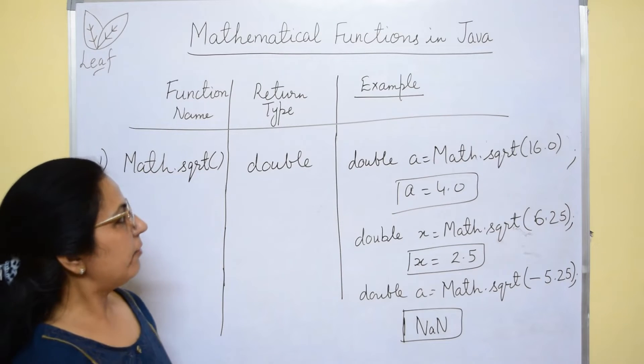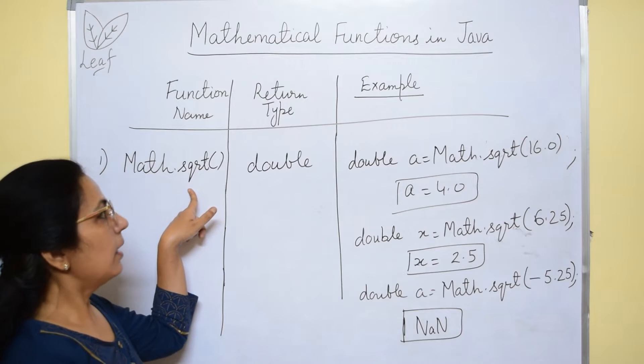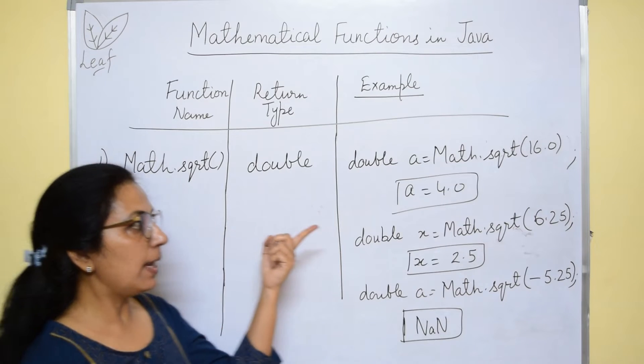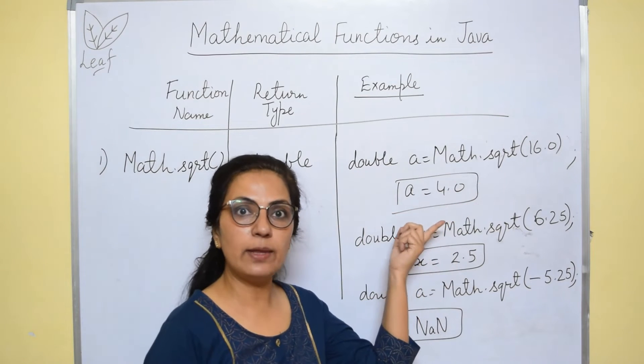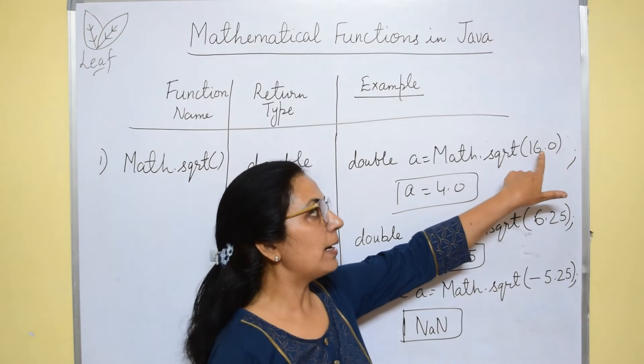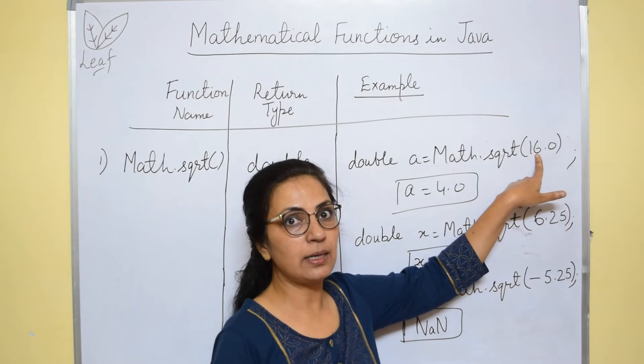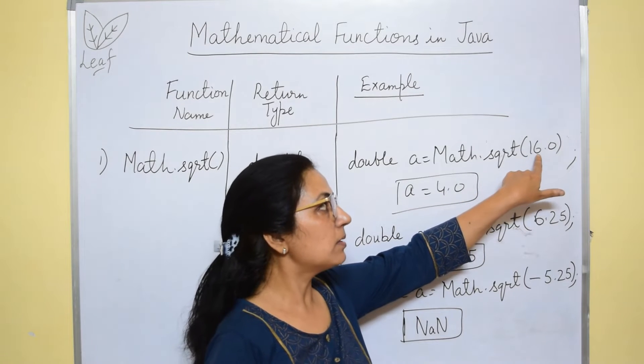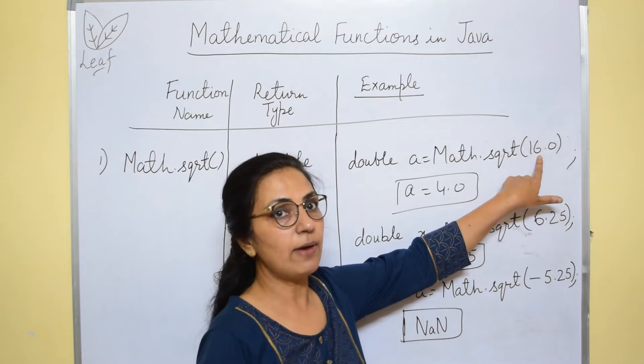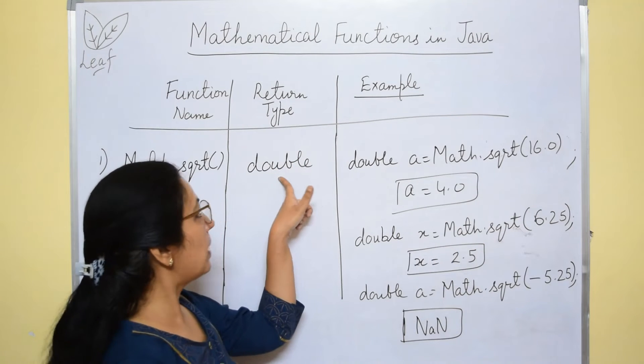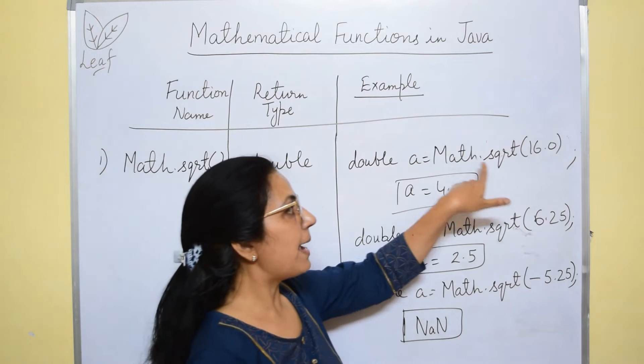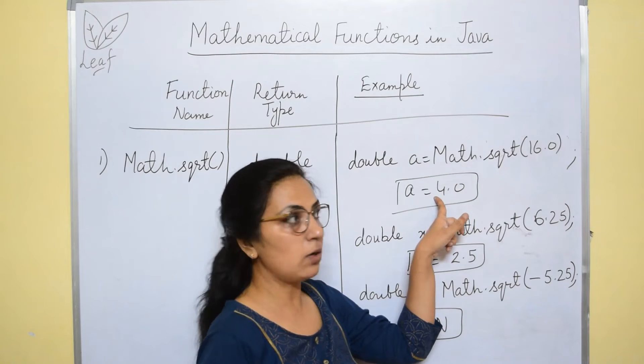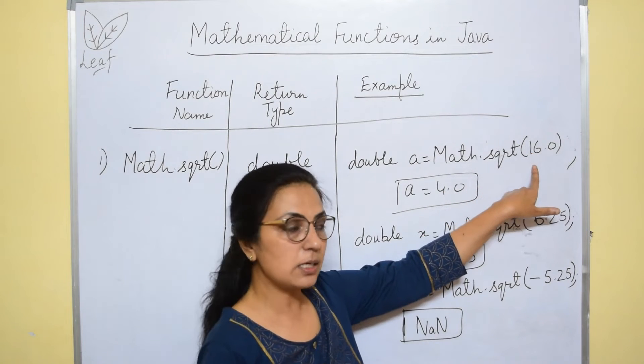Next, we have math.sqrt function. In maths also, you do under root or square root. Similarly, this function also calculates the square root value of the given number. Again, in math.sqrt function, we pass on only one argument and it calculates the square root value of that. Always remember that this value should be a positive value only. And the return type of this function is double. If I give math.sqrt of 16.0, answer will be 4.0. 4.0 is the square root value of 16.0.